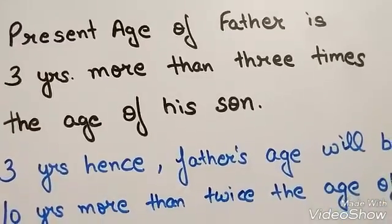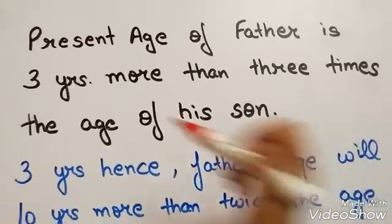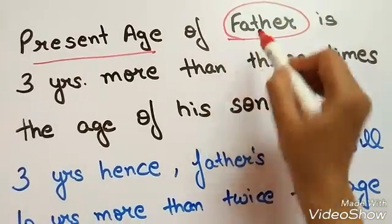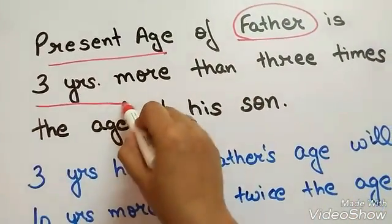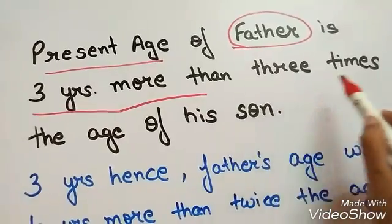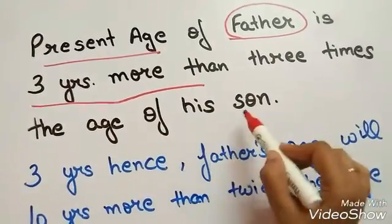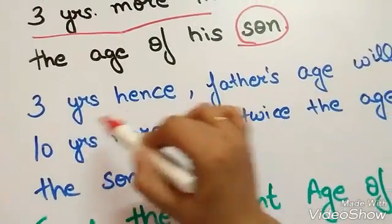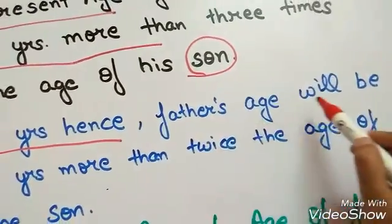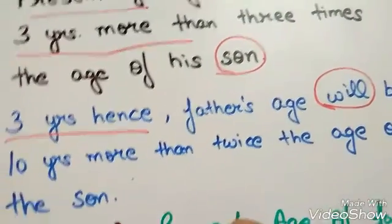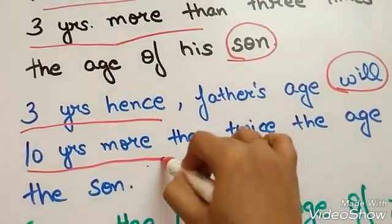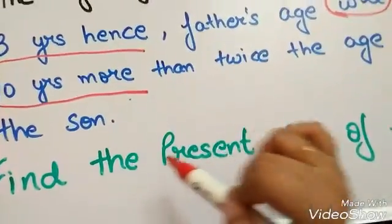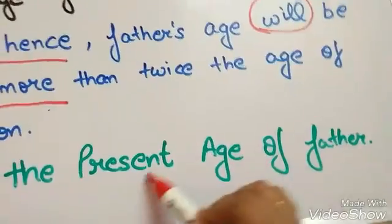Let's see how to solve questions on ages. The present age of father is 3 years more than 3 times the age of his son. 3 years hence, father's age will be 10 years more than twice the age of the son. Find the present age of father.